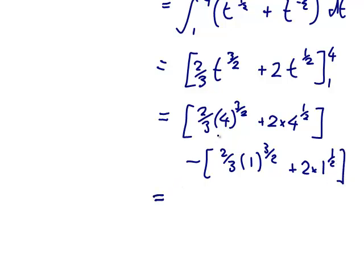All right, let's see. 4 to the 3 over 2, well, that would be 4 either cubed and then root, or the square root of 4 and then cubed. So the square root of 4 would be 2, 2 cubed would be 8, so that's 2 thirds times 8, and 4 to the half is 2, so that's 2 times 2, minus, well, 1 to anything is 1. 2 thirds plus 2.